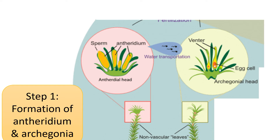These sperm cells are released through the opening at the terminal end of the anthridium at maturity. In the case of archegonium, it is a flask-like structure. The top narrow portion is called the neck region, made up of neck cells, neck canal cells, and at the top there are four cover cells. The swollen basal region is called the venter region, with a venter canal cell and egg cell. At maturity, the venter canal cell and egg cell disorganize and form a mucilage that helps in the entry of sperm cells into the archegonium through the neck region.